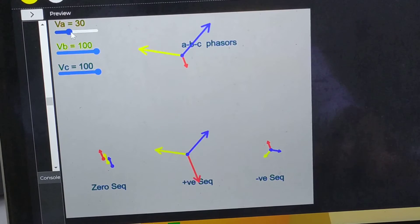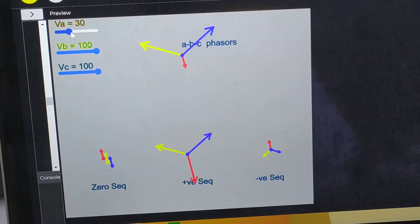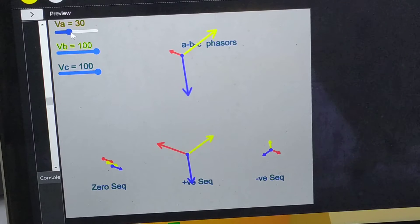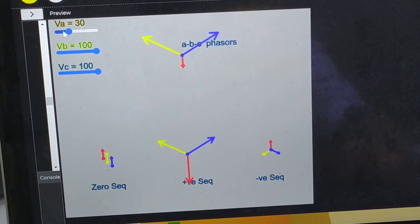Let me distort phase A further. Now A phase is 30, B phase is 100 and C phase is 100. So you can see that there is a substantial amount of zero sequence and negative sequence. I will distort the A phase further.